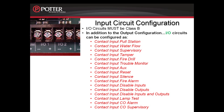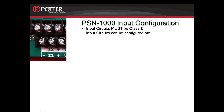Remember, each I/O circuit can be configured individually. If additional input circuits are required, you can install a PSN-1000 smart power supply that gives you two additional input circuits. The two I/O circuits on the PSN-1000 also must be wired Class B, and they have the same configuration list as the I/O circuits on the input side.